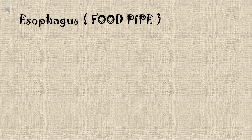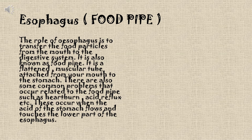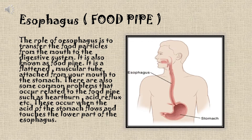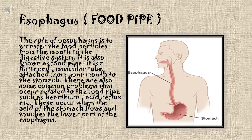Esophagus, also known as the food pipe. The role of the esophagus is to transfer food particles from the mouth to the digestive system. It is a flattened muscular tube attached from your mouth to the stomach. There are also some common problems related to the food pipe, such as heartburn and acid reflux. These occur when the acid of the stomach flows and touches the lower part of the esophagus.